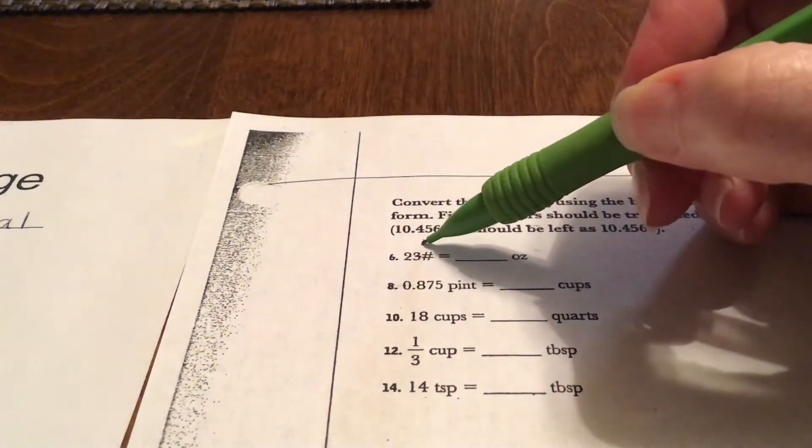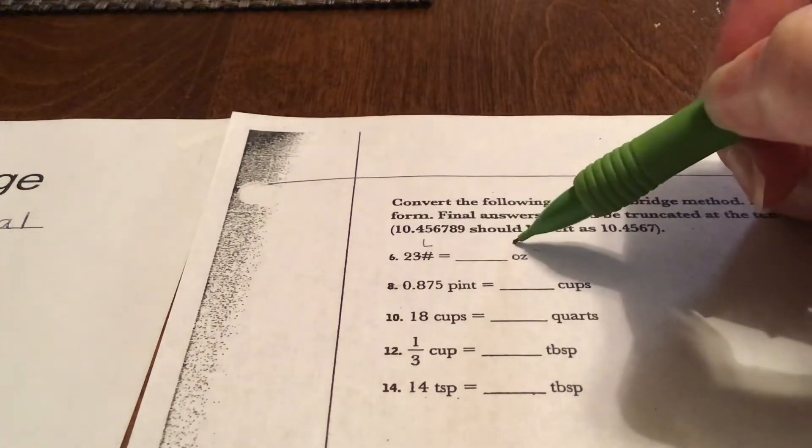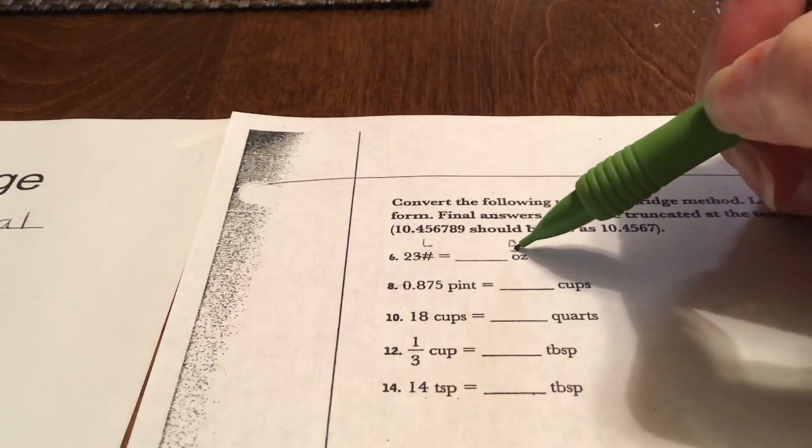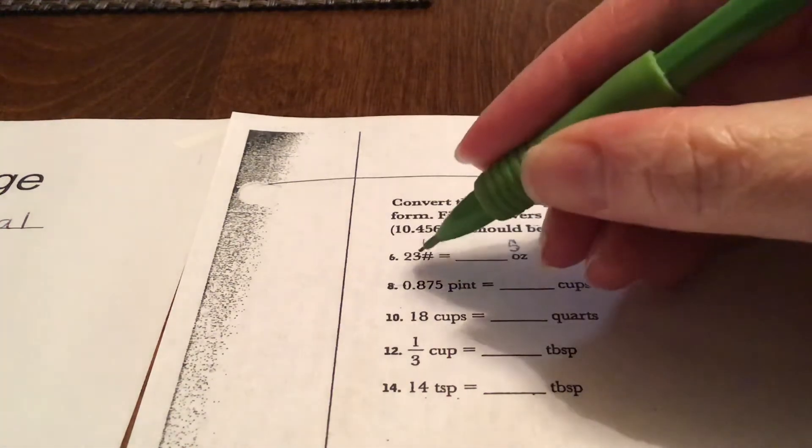So I'm going to put a little L above here and a little S because that's going to tell me that I'm going from a larger unit into a smaller unit, which means that I'm going to multiply.